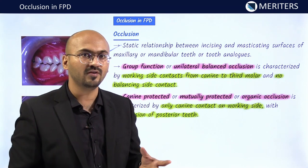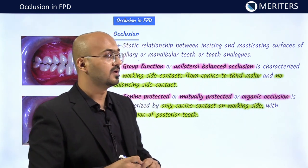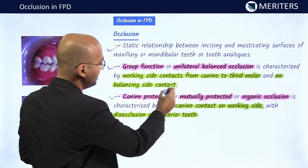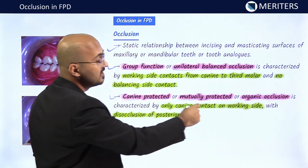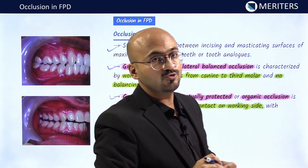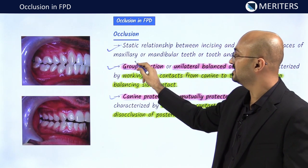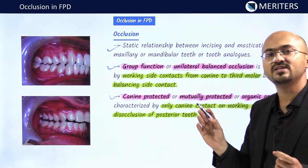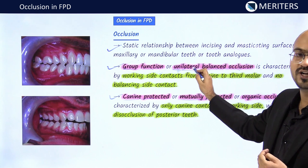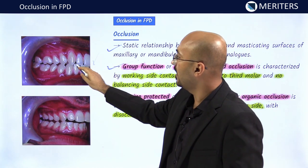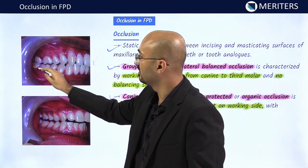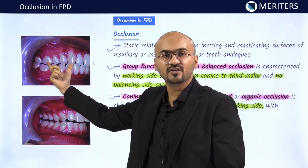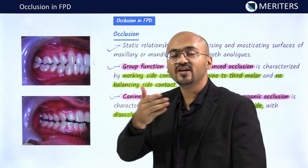Occlusion is not only important in restoring form and function, but you have to understand it right from the diagnostic step. There are two types of occlusion seen in a dentate patient: group function or unilateral balanced occlusion, and canine protected or mutually protected or organic occlusion. In group function occlusion, a group functions together. In unilateral balanced occlusion, there is simultaneous tooth contact on one side — the canine, premolars, and molars all touch the antagonist tooth even in lateral movements.